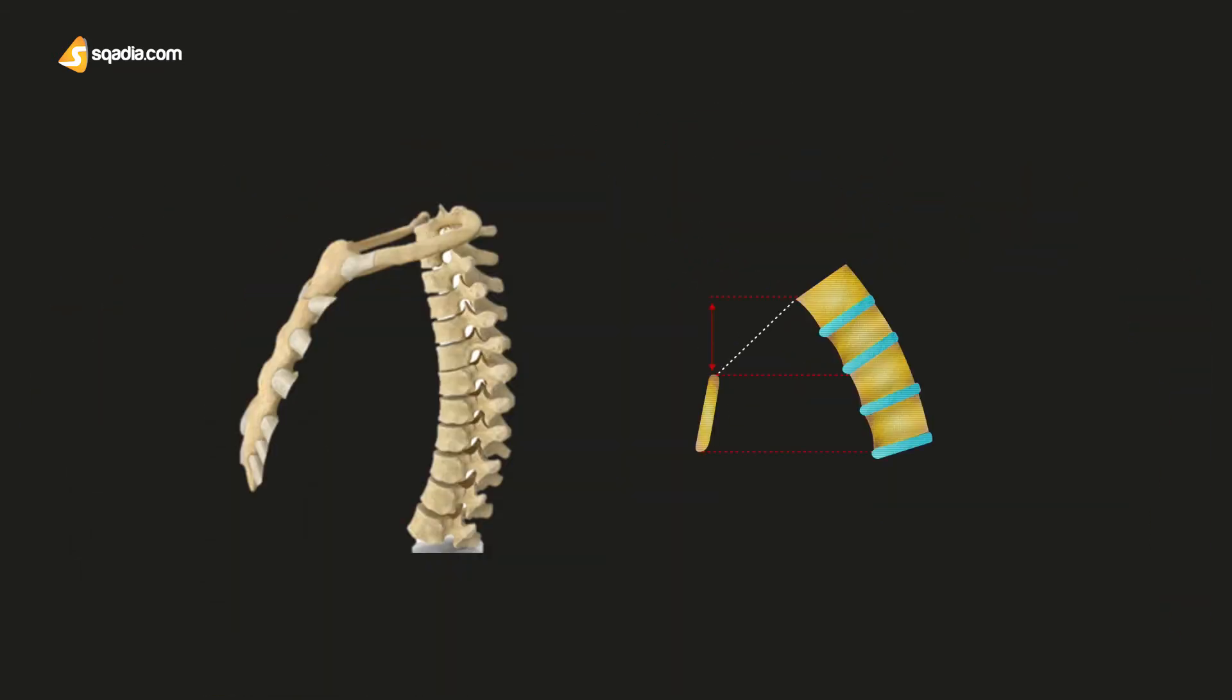When we talk about the plane of the superior aperture, the plane of the inlet is directed downwards and forwards with an obliquity of approximately 45 degrees. So as you can see, this is the plane of the superior aperture as it's going through here. And this is the 45 degree angle. Now when we see it in this image, you can see it in vivo.